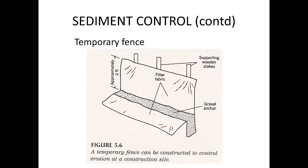Figure 5.6 in your textbook gives a schematic of the use of temporary fences, which are placed around the perimeter of sites to reduce erosion.